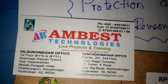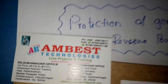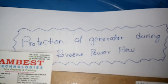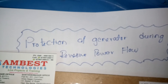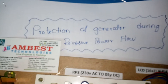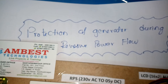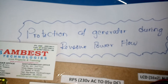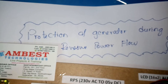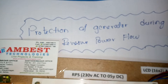Welcome to Ambash Technologies. Today we are going to see protection of a generator during reverse power flow. Reverse power flow generally occurs due to two conditions: one is prime mover failure and another one is uneven voltages.